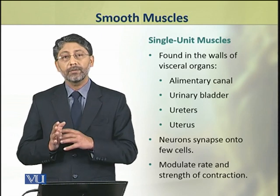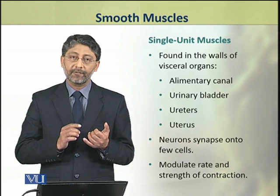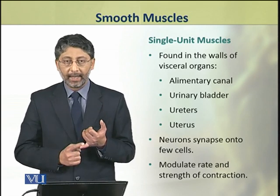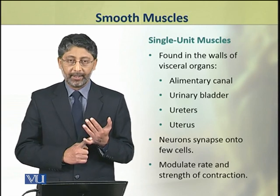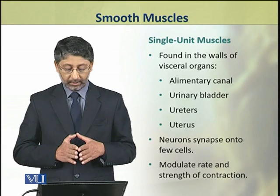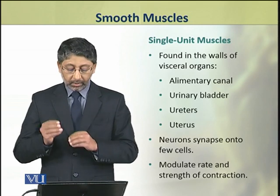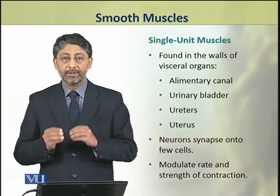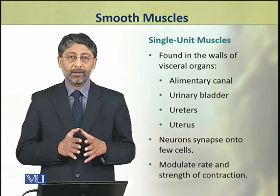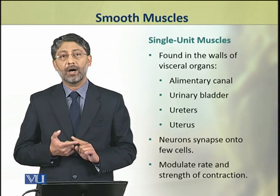The single unit smooth muscles are found in the walls of visceral organs. For example, the alimentary canal, urinary bladder, ureters, and uterus. Neurons synapse onto only a few single unit smooth muscle cells, and these neurons modulate the rate and strength of contraction.